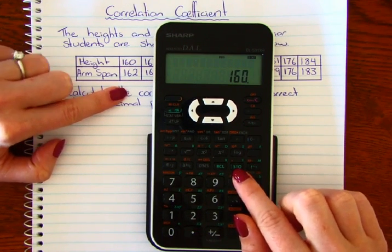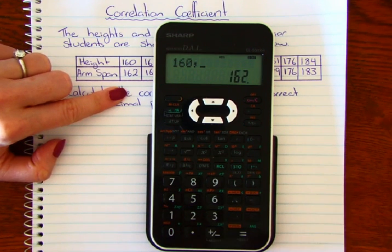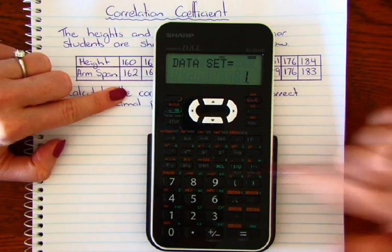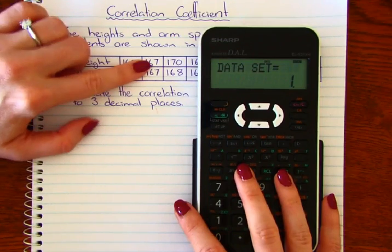Then this STO button will give us a comma, and we'll enter their arm spans 162. Then we'll press M plus to enter that into the memory. So we need to do that for all of our data now. So the next one.